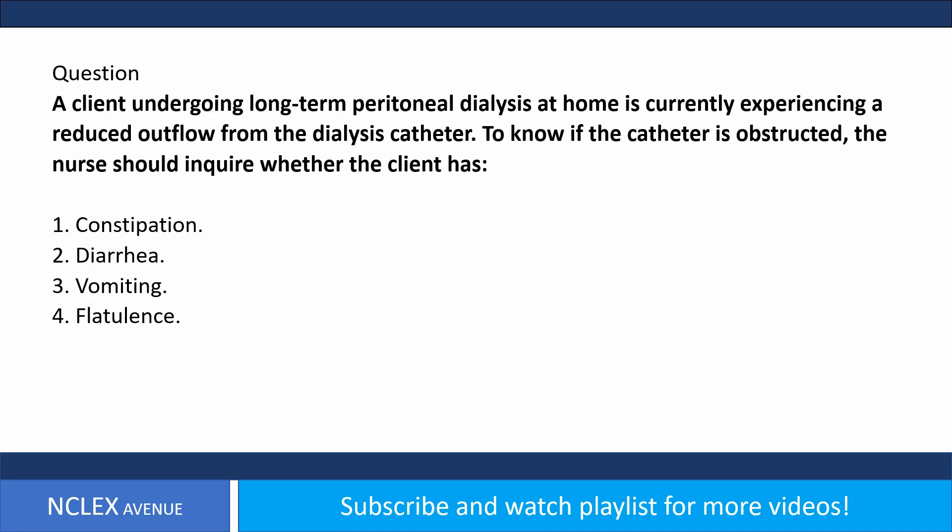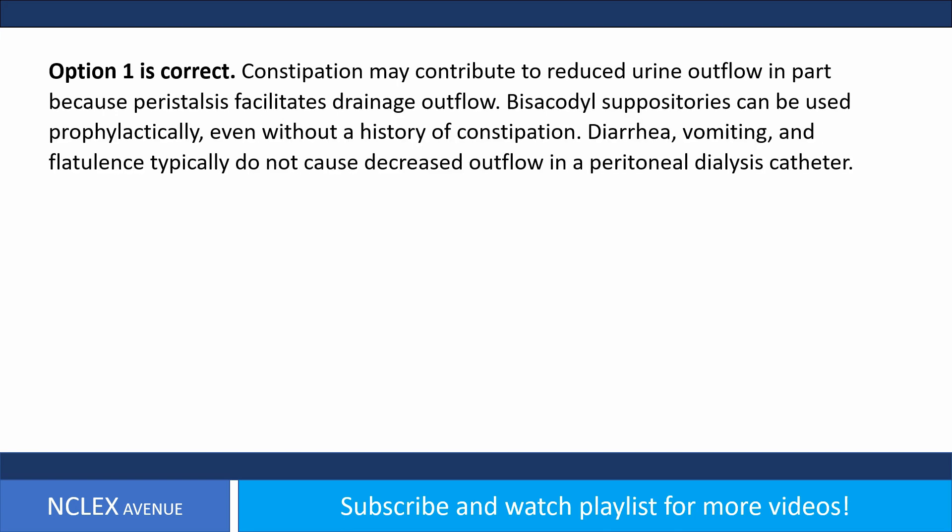A client undergoing long-term peritoneal dialysis at home is experiencing a reduced outflow from the dialysis catheter. To know if the catheter is obstructed, the nurse should inquire whether the client has: one, constipation; two, diarrhea; three, vomiting; four, flatulence.